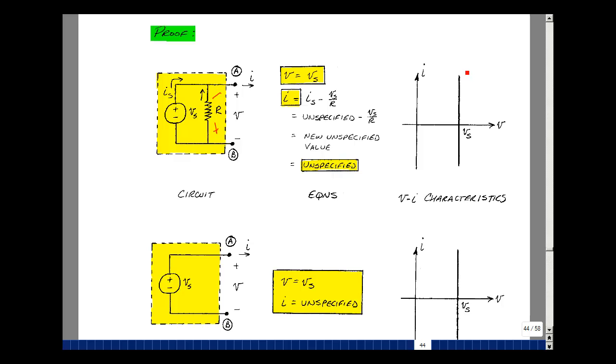So you could graph that. The voltage V is equal to V sub S. Suppose that's just a constant. And the current can be positive, it can be negative, and it can be zero. But this is our definition of an ideal voltage source.